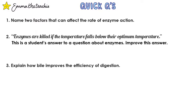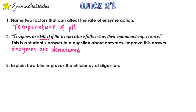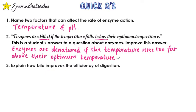Question one: name two factors that can affect the rate of enzyme action — temperature and pH. Question two asks to improve a student's answer that said 'enzymes are killed if the temperature falls below their optimum temperature.' The correction: enzymes cannot be killed, they can only be denatured. Also, denaturation occurs when the temperature rises too far above the optimum, not below it. Below the optimum, enzymes and substrate molecules simply have less kinetic energy, so there are fewer successful collisions and the rate of reaction slows down.